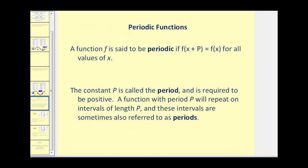Okay, so let's briefly talk about periodic functions. A function f is said to be periodic if f of x plus p equals f of x for all values of x. So for the two graphs we just looked at, if p was two pi, these two functions would always be equal to each other. This constant p is called the period and it is required to be positive. A function with period p will repeat on intervals of length p. And these intervals are sometimes referred to as the periods.